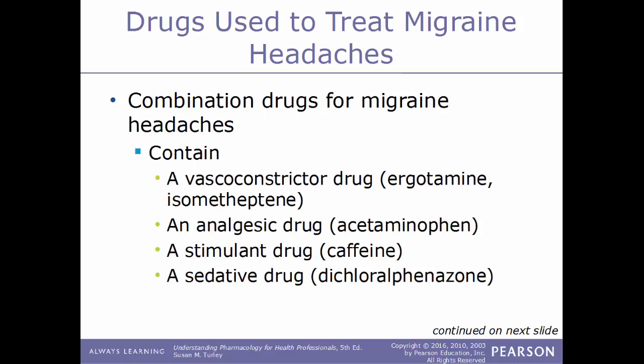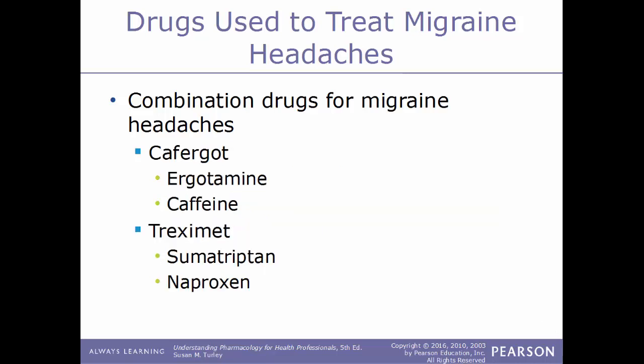Combination drugs are often used to treat migraines, and they typically contain a vasoconstrictor drug such as ergotamine or isometheptene. They can also include an analgesic like acetaminophen, a stimulant like caffeine, or a sedative such as dichloralphenazone. Examples of combination migraine drugs include Cafergot, which is a combination of caffeine and ergotamine, and Treximet, which is a combination of sumatriptan and naproxen.